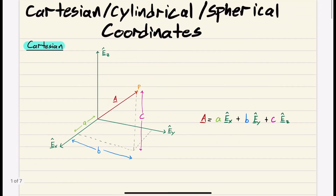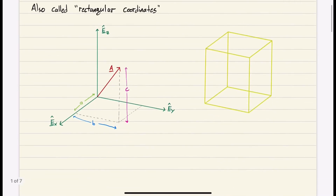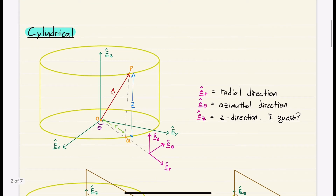Now we're going to define the same vector A, but in cylindrical coordinates. What are the two properties we need to define a cylinder itself? A cylinder has some radius R and some height Z. Those two properties define our cylinder.